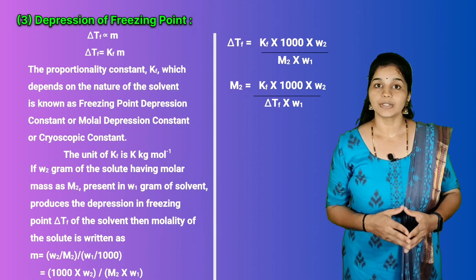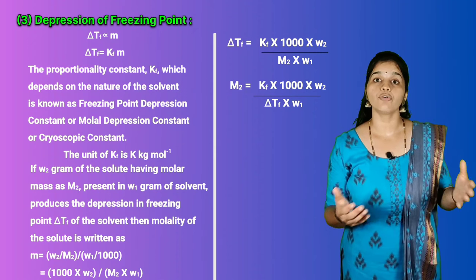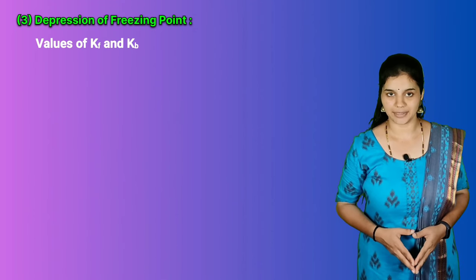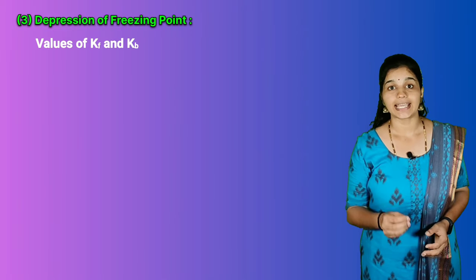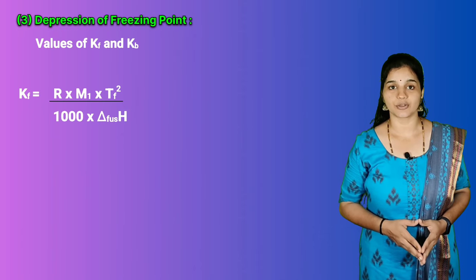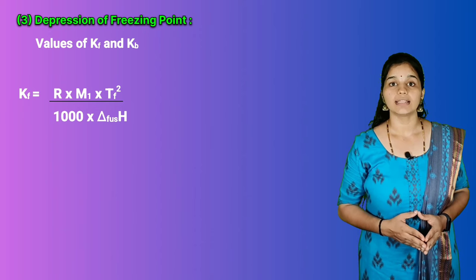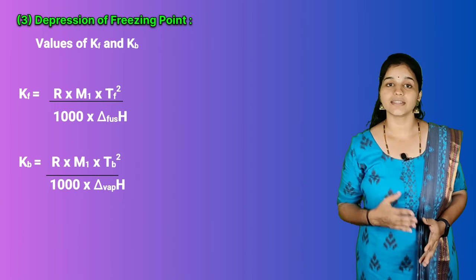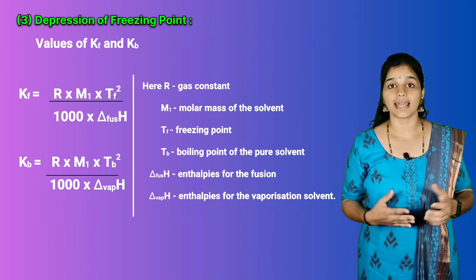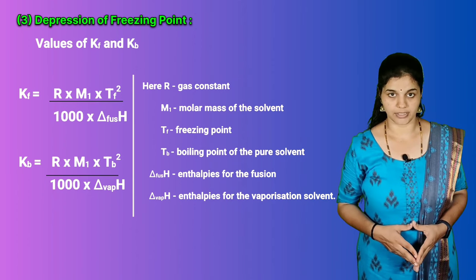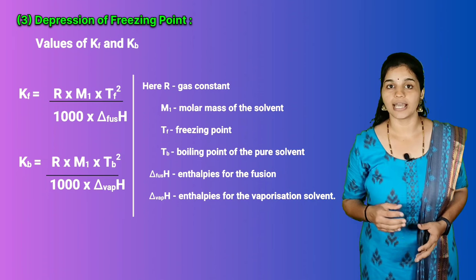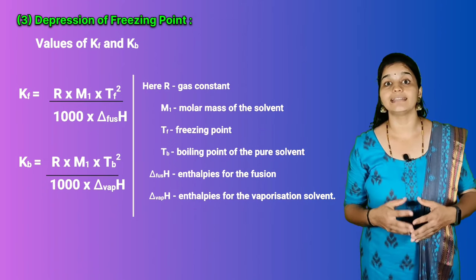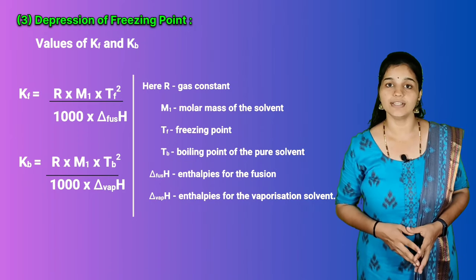By knowing the quantities W1, W2, and ΔTf along with the molar freezing point depression constant Kf, we can determine the molar mass of the solute. The values of Kf and Kb, which depend only on the nature of the solvent, can be calculated from: Kf = R × M1 × Tf² / (1000 × ΔH_fusion) and Kb = R × M1 × Tb² / (1000 × ΔH_vaporization), where R is the gas constant, M1 is the molar mass of the solvent, Tf and Tb are the freezing and boiling points of the pure solvent in Kelvin.